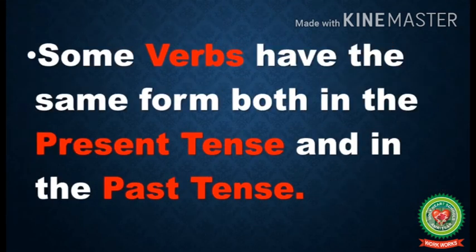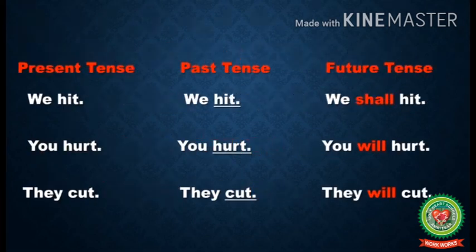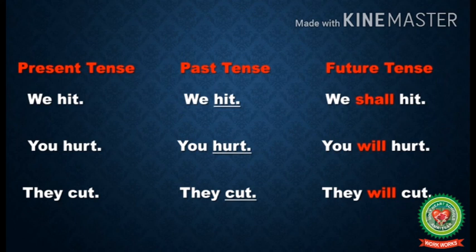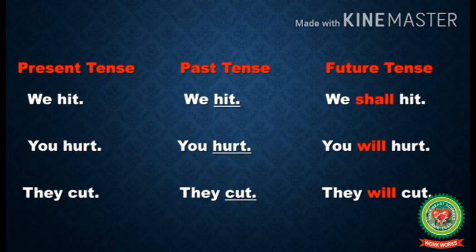Children, some verbs have the same form both in the present tense and in the past tense. First example: we hit — the verb 'hit' is in present tense. Its past tense will be 'we hit' and its future tense will be 'we shall hit'. Second example: you hurt — its past tense will be 'you hurt' and its future tense will be 'you will hurt'. Third example: they cut — its past tense will be 'they cut' and its future tense will be 'they will cut'.